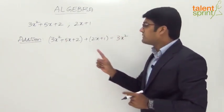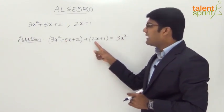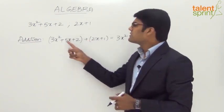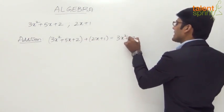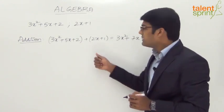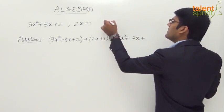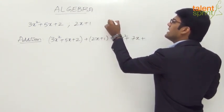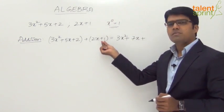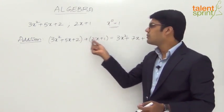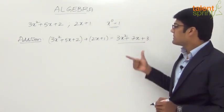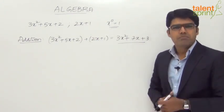Now let us look at the power 1 terms: 5x in the first polynomial and 2x in the second one. Add these two: 5x plus 2x gives us 7x. Now for the constant terms — the power 0 terms. This is 2 into x to the power 0, and we know from our concept of exponents that x to the power 0 equals 1. So 2 plus 1 equals 3. Therefore, 3x squared plus 5x plus 2 plus 2x plus 1 equals 3x squared plus 7x plus 3. As simple as that.